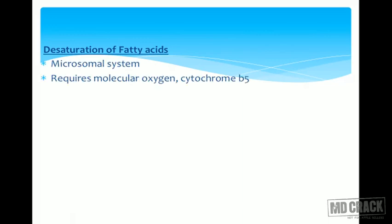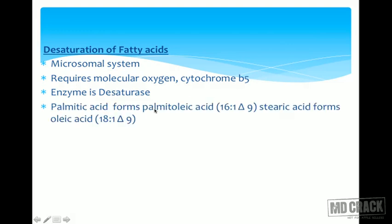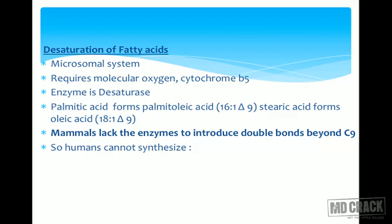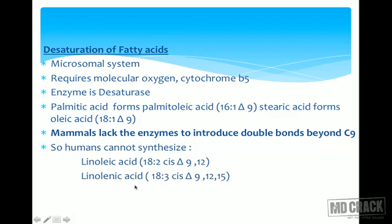Desaturation of fatty acids also occurs in the body by the microsomal system. It requires molecular oxygen and cytochrome b5; the enzyme is a desaturase. Palmitic acid forms palmitoleic acid (16:1, Δ9); stearic acid forms oleic acid (18:1, Δ9). Importantly, mammals lack the enzyme to introduce double bonds beyond the Δ9 position. This means certain polyunsaturated fatty acids with double bonds beyond Δ9 are essential, because we cannot synthesize them.